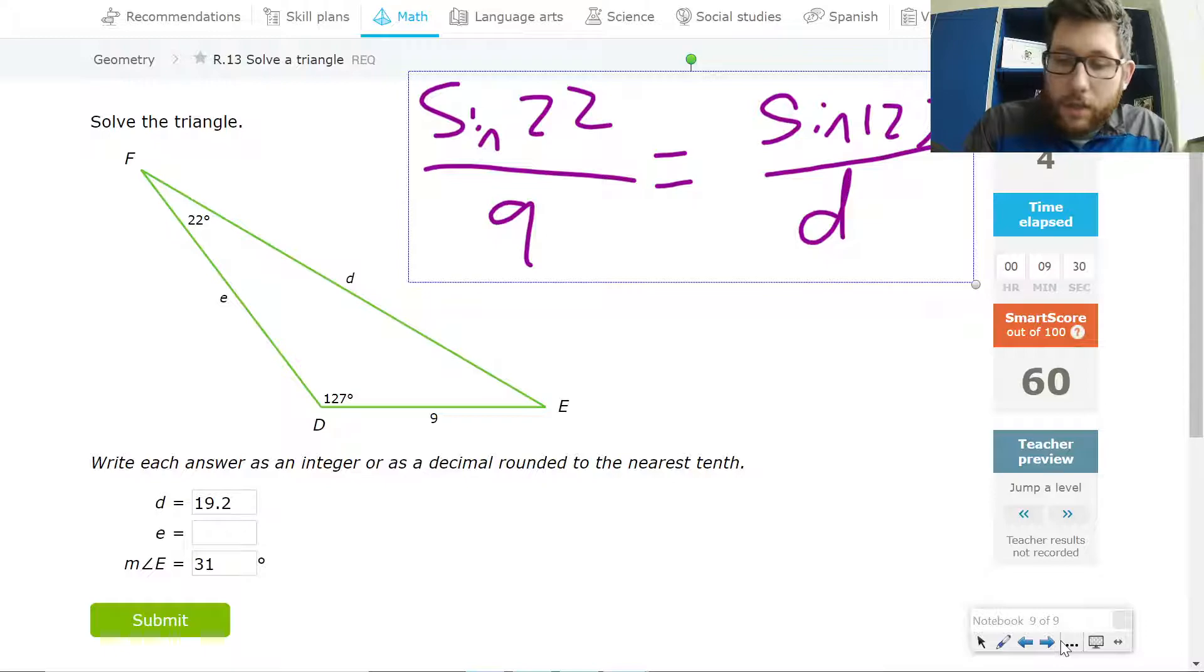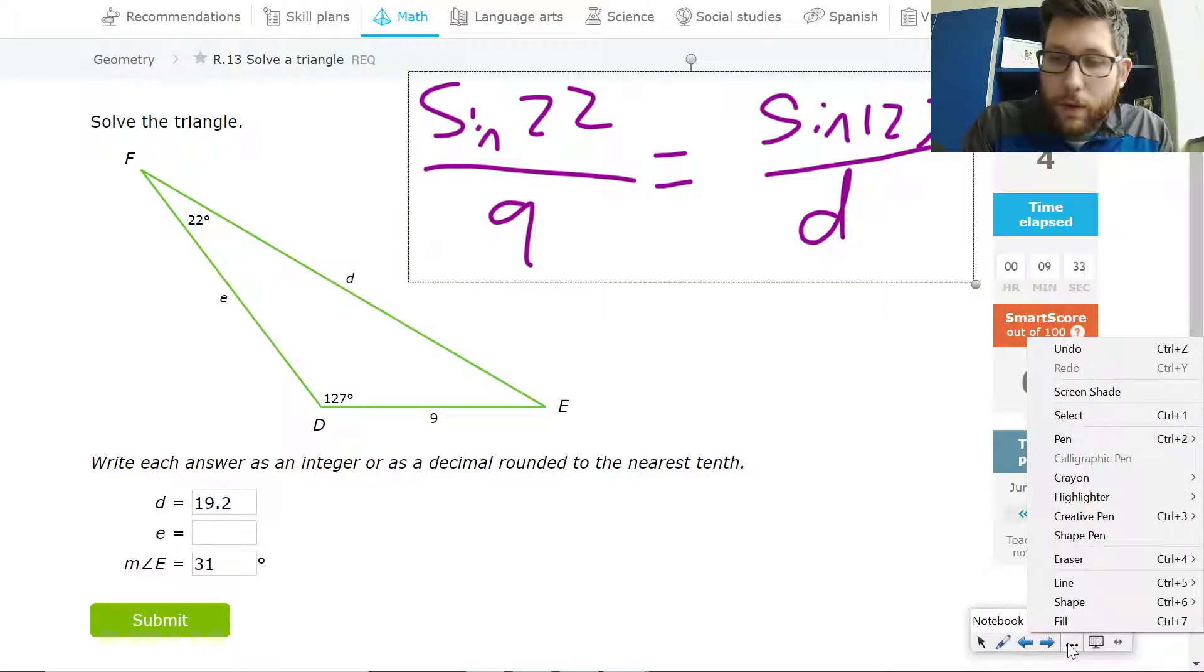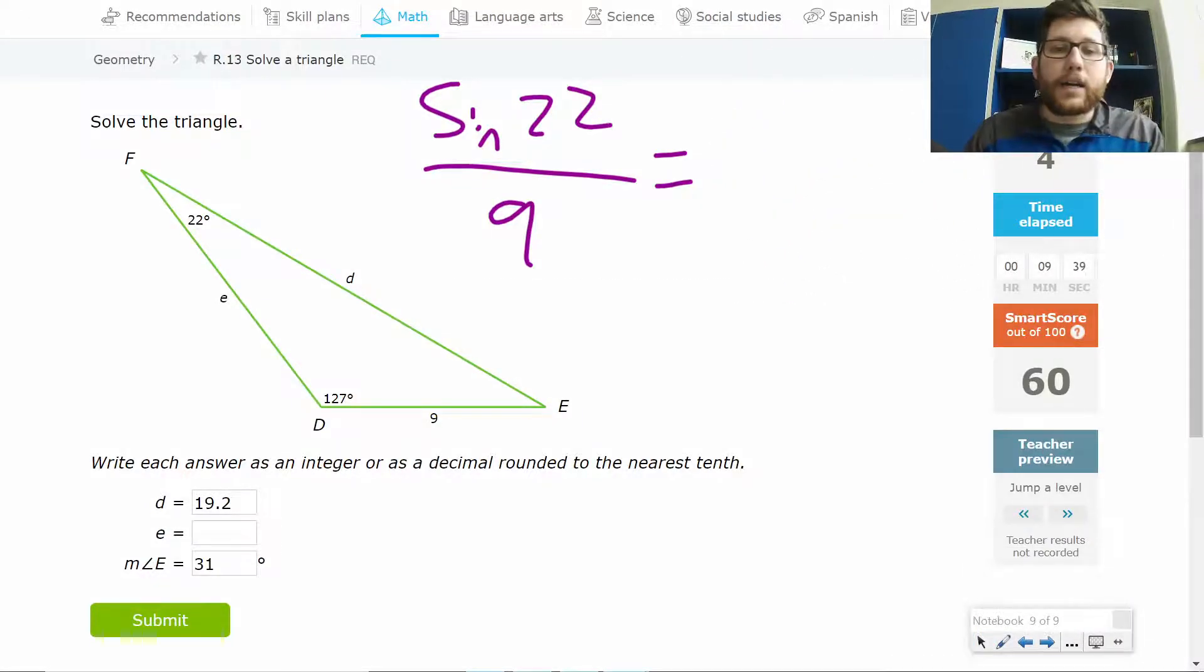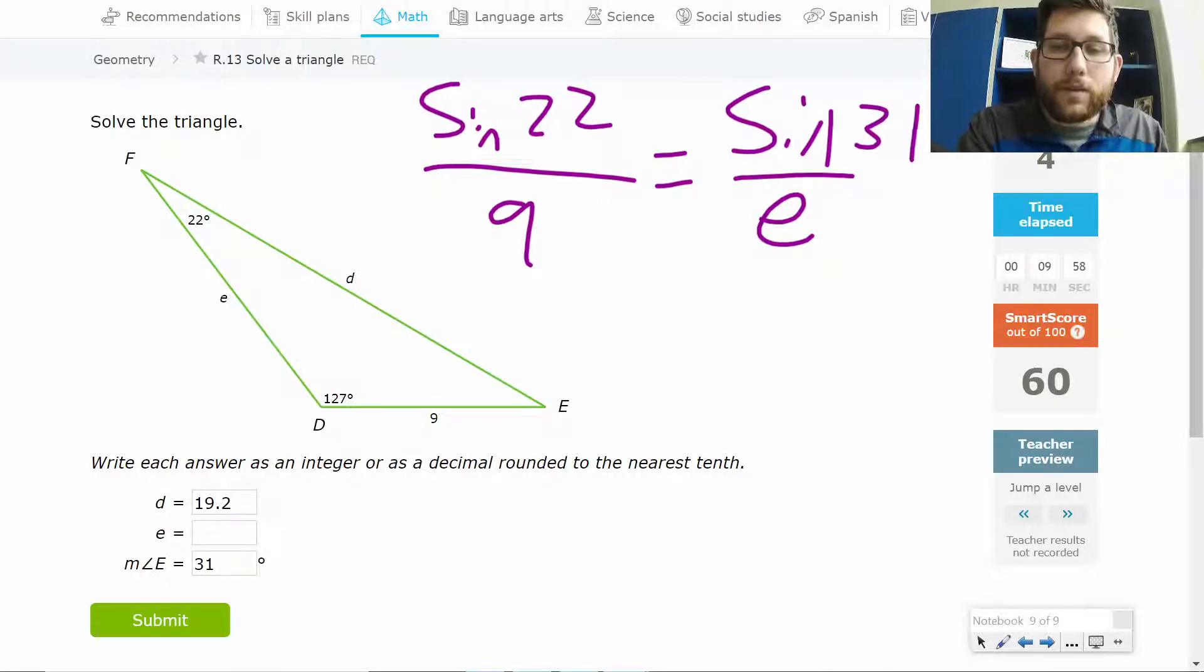And then what I would do is I would actually use law of sines again. What I would do is I would actually keep my original ratio. So let me show you here. That's sine 22 over 9. There's no rounded figures. So I probably want to use that over using this 19.2 that I know is a rounded value. So when I solve for E, what I'm going to do is I'm just going to set up sine 22 over 9. I'm going to keep that the same and then do sine of 31 here. Sine 31 all over E.